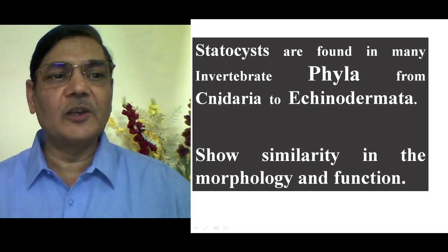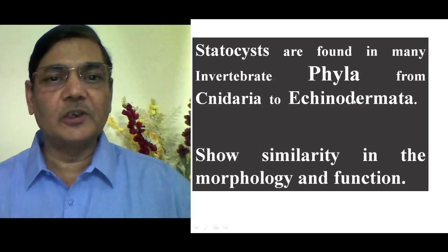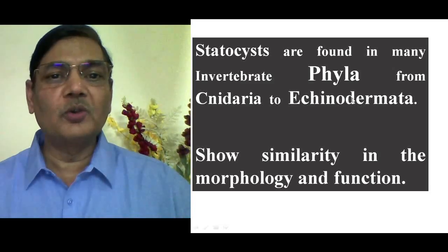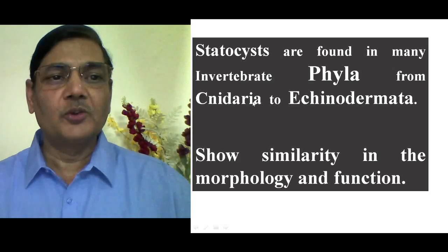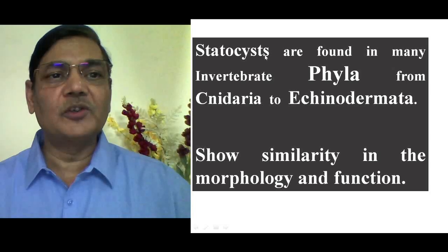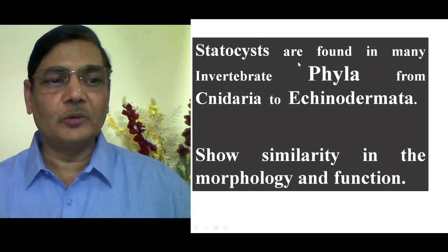Cnidarians are diploblastic animals, whereas Echinoderms are triploblastic, highly evolved non-chordate animals. They are considered even to be closer to chordate animals. So in all forms of non-chordate animals, the presence of Statocyst as an organ of equilibrium is known.